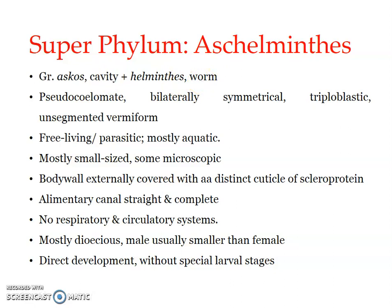The superphylum Aschelminthes includes pseudocoelomate, bilaterally symmetrical, triploblastic organisms with unsegmented and mostly vermiform bodies. Sometimes they can be superficially segmented, but mostly unsegmented. The body is usually provided with a cuticular covering. The body wall is covered with a distinct cuticle which is made up of scleroprotein. The alimentary canal is straight and complete.